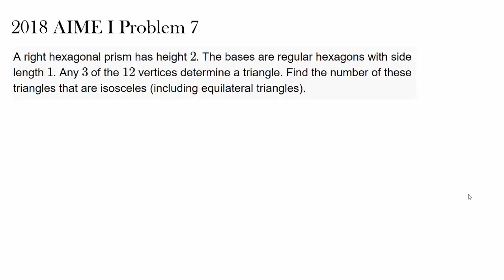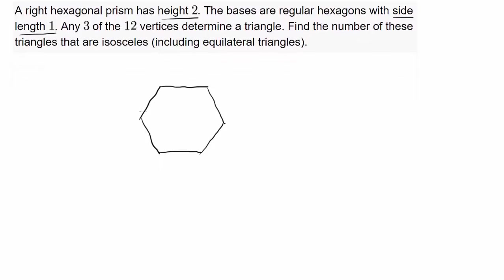Let's try out this pretty tricky counting question from 2018 AMC Problem 7. A right hexagonal prism has a height of 2 and the bases are regular hexagons with side lengths of 1. We have the bases being a regular hexagon, and it's a hexagonal prism, so we have another regular hexagon down below. We can draw out the dotted lines.